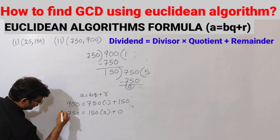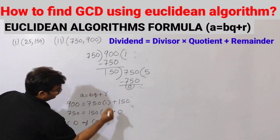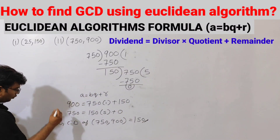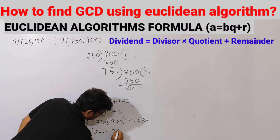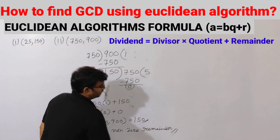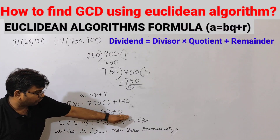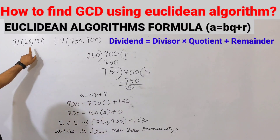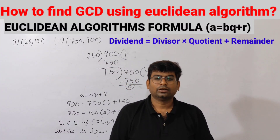GCD of 750 and 900 is equals to 150. This is our answer — the least non-zero remainder. This is our final answer. Bye bye.